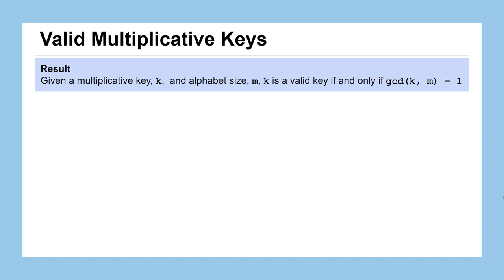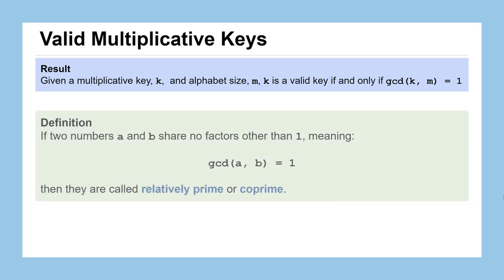So I think we've done a good job explaining why our conjecture must be true. Let's call it a result. We could summarize our work as saying given some multiplicative key K that we're going to use for an alphabet of size M, K is a valid key if and only if the greatest common divisor between K and M is 1, meaning that the only shared factor, the largest shared factor, and in this case the only shared factor, between these two numbers is 1. And that actually leads us to a definition. Numbers that have that property in mathematics have a special name. If any two numbers A and B share no factors other than 1, meaning their greatest common divisor is 1, we can call those numbers relatively prime or also co-prime.